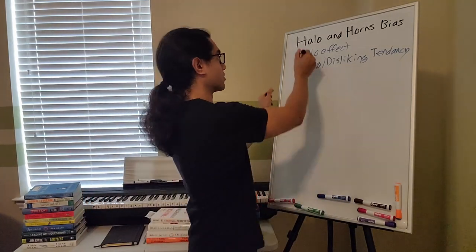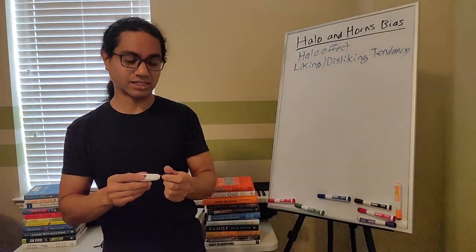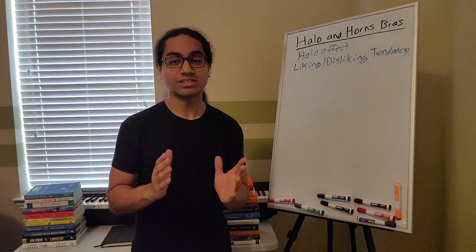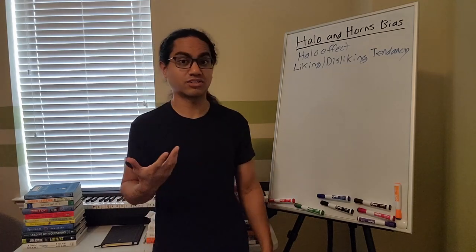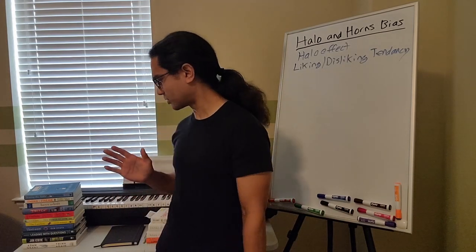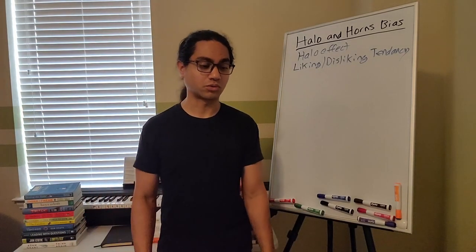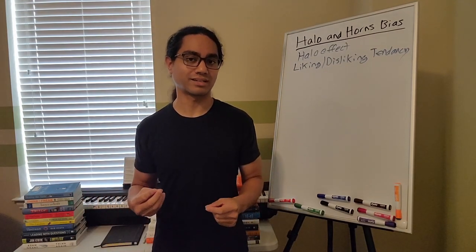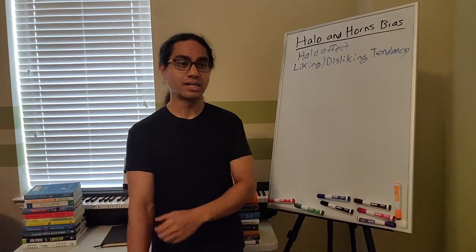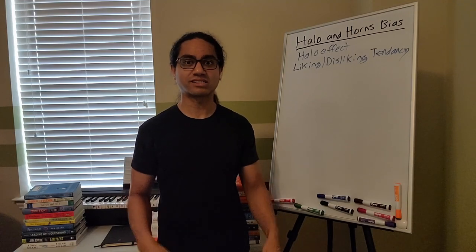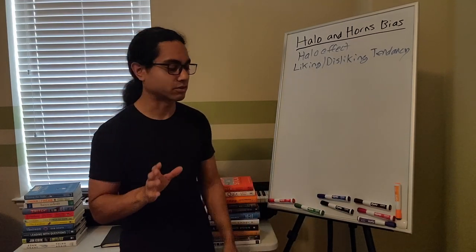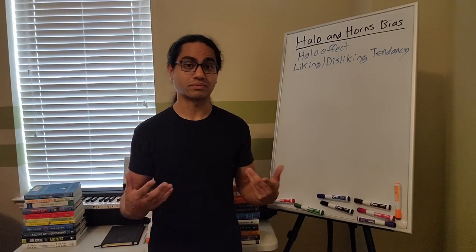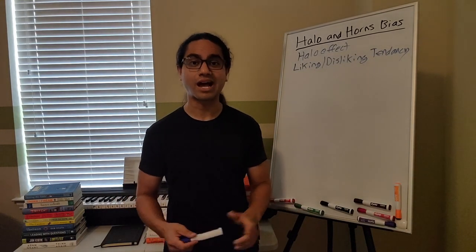Halo and horns bias makes it easy to remember — I give you all these silly examples to make it easier for you. The sillier something is, the easier it is to remember. In fact, there's a book back here, Limitless by Jim Quick, and he talks about how if you're trying to remember multiple things, the sillier you make those things in relation to each other — like imagining an ice cream cone fishing — the easier it is to remember. Anyway, a little tangent there. Halo and horns bias: we know the halo is good, horns are bad.